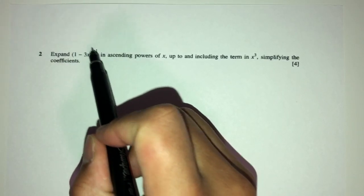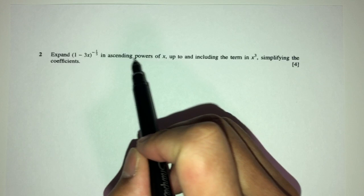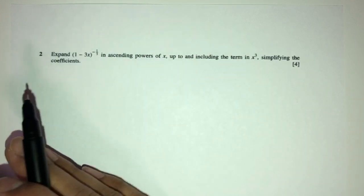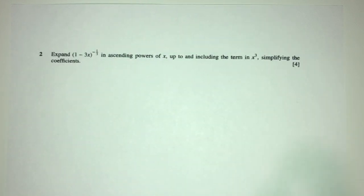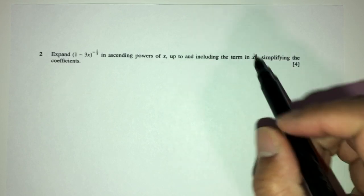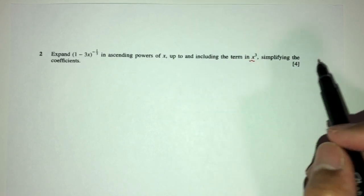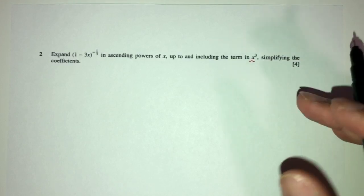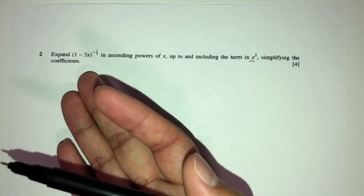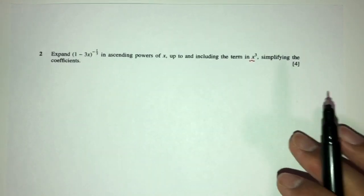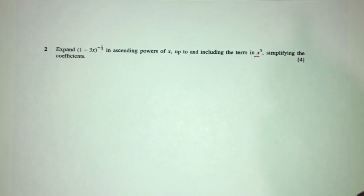Now, let's move on to question number 2. So, here we have to expand this one right here. In ascending powers of x, so from smaller x up to bigger x's, up to and including the term in x cubed. Okay, cool. Simplifying the coefficient. So, one by one, how would we do this? So, as we can see, it is a binomial expansion.